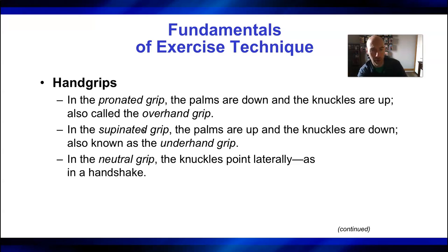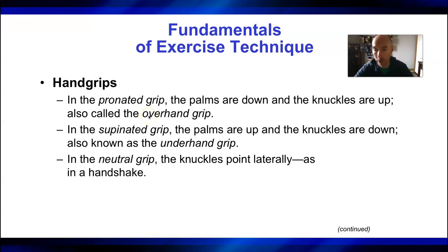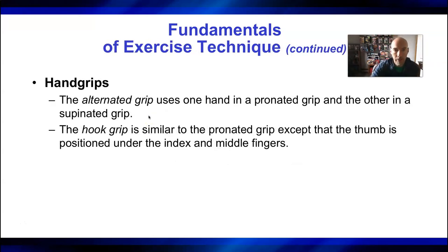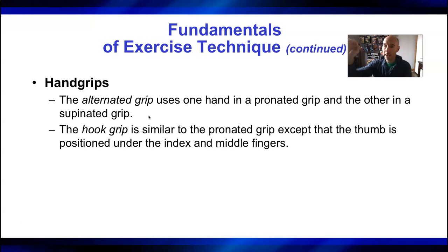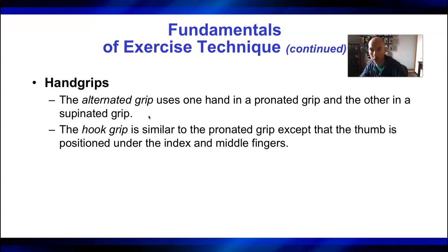For a deadlift, the alternating grip is appropriate. For a bench press, the pronated grip is appropriate. Personally, I like to do chin-ups, which use the supinated grip with palms facing your body. Mix it up, but make sure you're doing it safely. The hook grip is one where instead of wrapping your thumb around the bar, you grip it differently with the thumb underneath the fingers. This can be used with certain exercises — some power lifters use it in the bench press. Go gently with this one because the bar could slide out, since the thumb being wrapped around normally keeps it locked in.